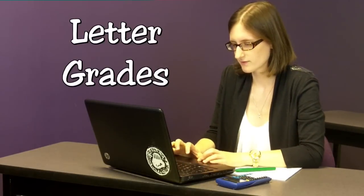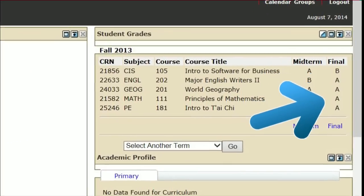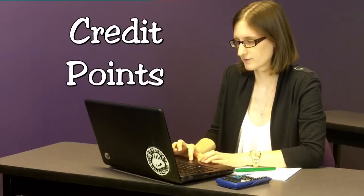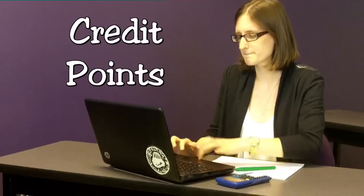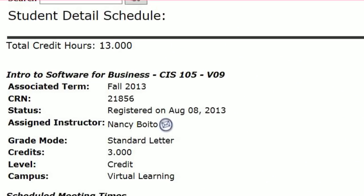First, you'll need to get some information about your classes. Start with looking up your letter grades for each class. You can find them on myHACC or D2L or you can ask your instructor. You'll also need to know how many credit points each of those classes is worth. You can look that up on your student detail schedule from myHACC or on the syllabus of each class.